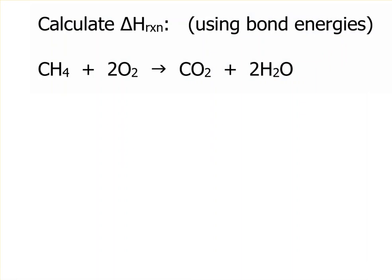The first thing you need to do is draw the Lewis dot structures. This is why I like this kind of problem because it requires you to use a lot of things you've learned. The reason you have to do the Lewis dot structures is because if you don't, you may not realize that the O2 bond here is a double bond, not a single bond. And if you looked up the single bond, you'd have the wrong energy.